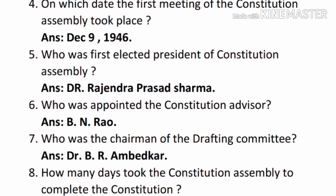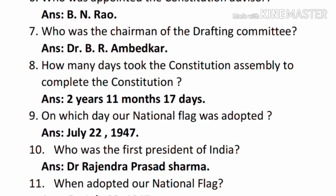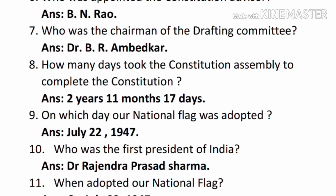Question number seven: who was the chairman of the Drafting Committee? — Answer: Dr. B.R. Ambedkar. Question number eight: how many days did the Constituent Assembly take to complete the Constitution? — Answer: two years, 11 months, and 17 days.